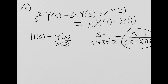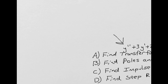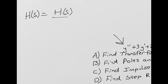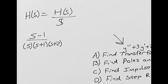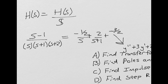The last thing we want to find is the step response. To find that, we take our transfer function H(s) and multiply by 1/s. We do partial fraction decomposition again on (s − 1) / [s(s + 1)(s + 2)], which yields −1/2 over s plus 2/(s + 1) plus −3/2 over (s + 2).